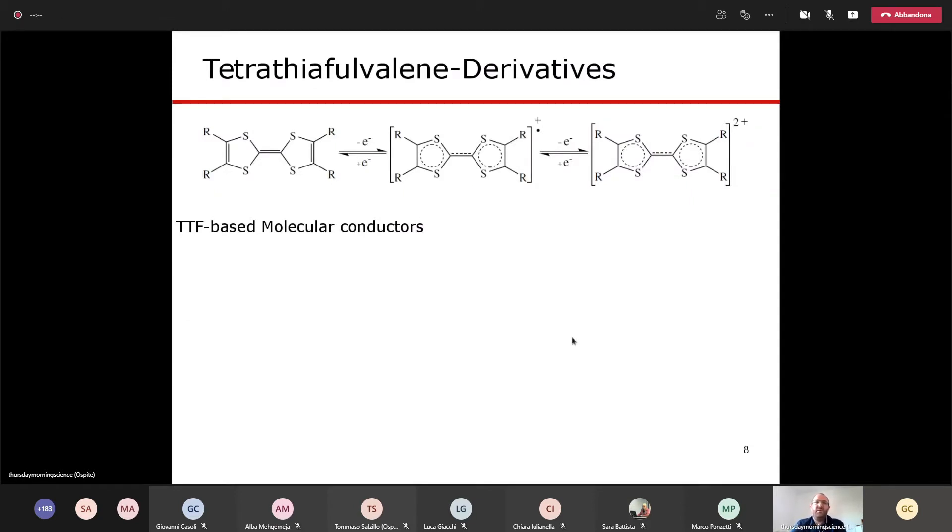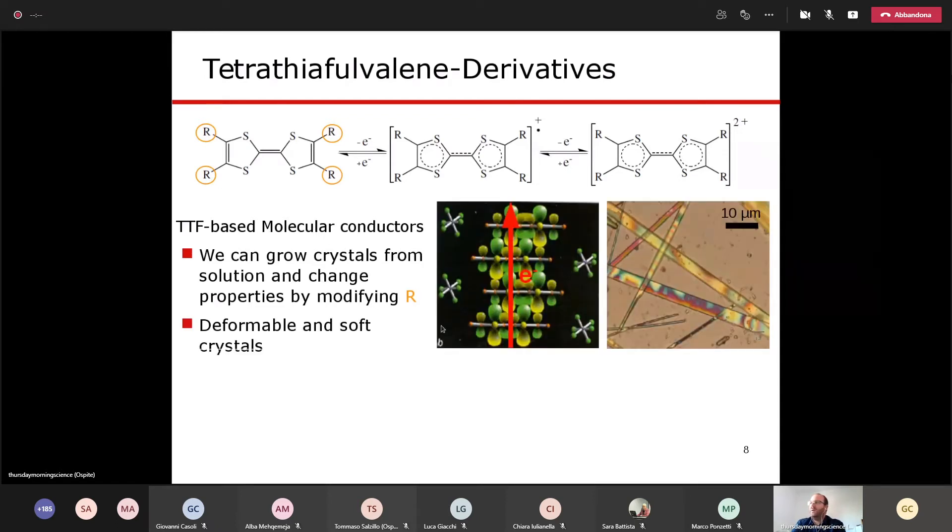At Nanomol, we work on tetrathiafulvalene derivatives. I will not ask you to remember this complicated name, but I still decided to put one of these molecular structures on the slide, because they depict how we believe, or at least how we think, that these materials could look like at a very small level. You will see here, these side groups, R, will permit us to modify these materials, so we can change their properties. One very interesting property of those materials is that we can grow crystals from solution. In a crystal, these molecules order in a very organized fashion, and then this helps for the electricity to flow through very easily. These crystals, as you can see here on this picture, are deformable, soft, but if you check the scale bar, they are around the same thickness, or even thinner than a human hair.